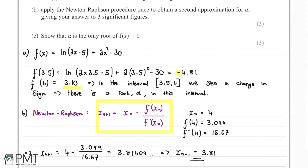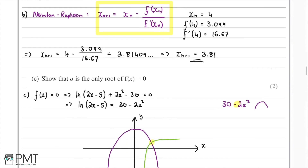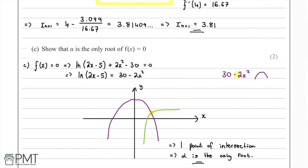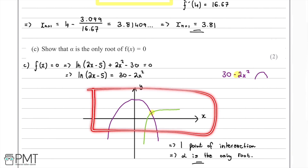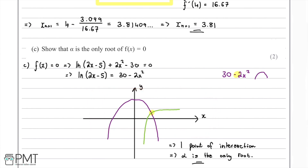Part C was also worth two marks — one for attempting to sketch both graphs, and a second for the conclusion that there is only one point of intersection and therefore α is the only root.